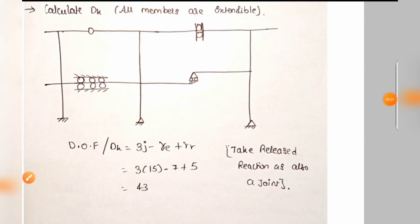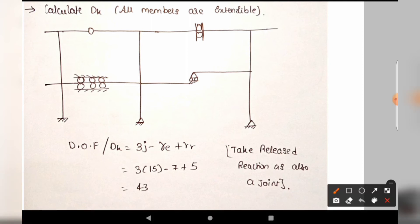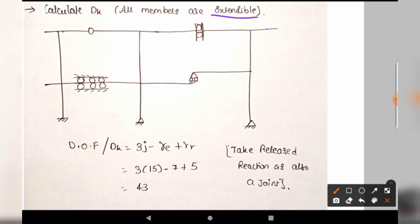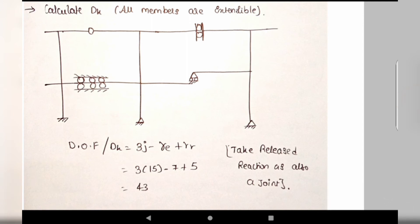Next is Example 3 — a more complex frame, but still straightforward. In this frame, members are extensible so members are not considered in the formula. The released reactions include an internal hinge, a vertical guided roller, a horizontal guided roller, and a normal roller support. The total number of joints is 16.